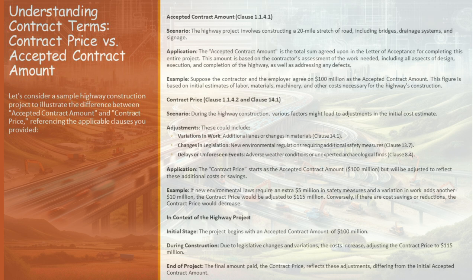This figure isn't plucked from thin air. It's meticulously calculated, considering the labor, materials, machinery, and a myriad of other factors crucial for bringing this highway to life. The accepted contract amount is the financial foundation of our project — an agreement on the cost of executing and completing the highway, including addressing any defects that might arise. This amount is a commitment, a starting point, reflecting the contractor's understanding of the project's demands.